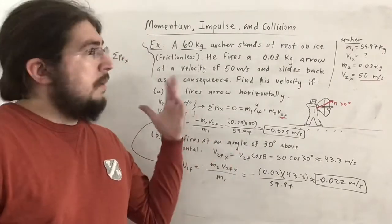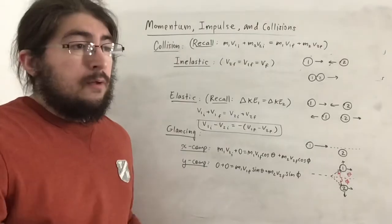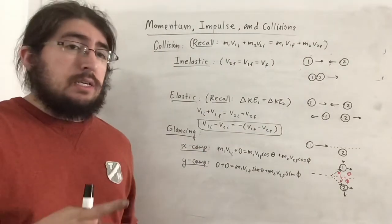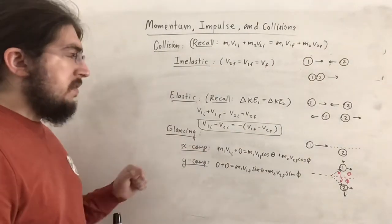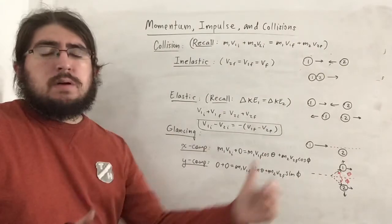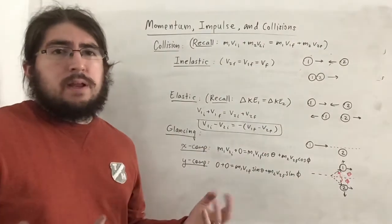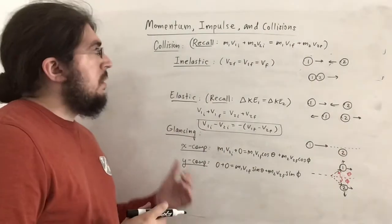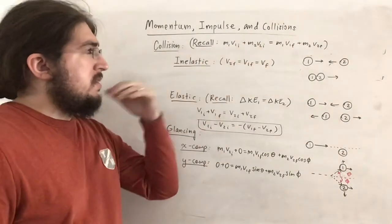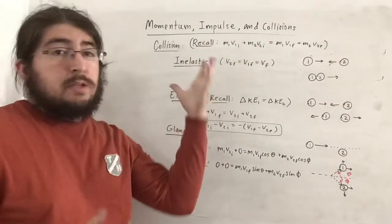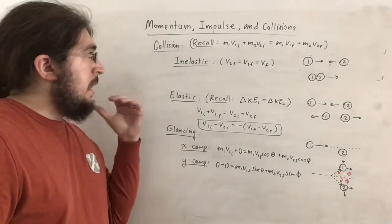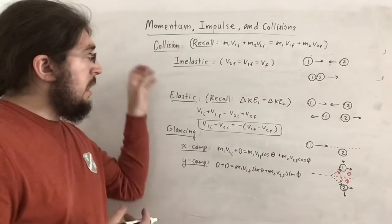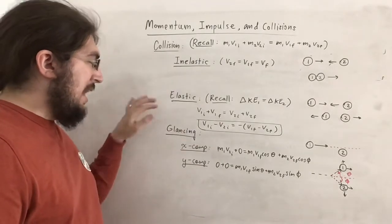Now finally we enter collisions. There are three different types of collisions: inelastic, elastic, and glancing. We first recall conservation of momentum, which we've been using already.